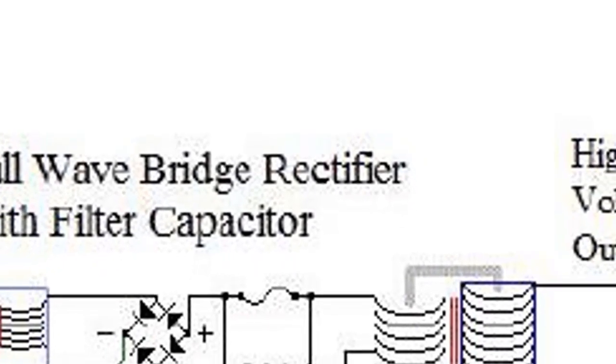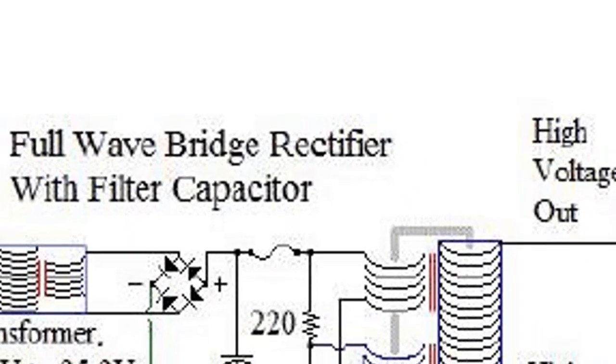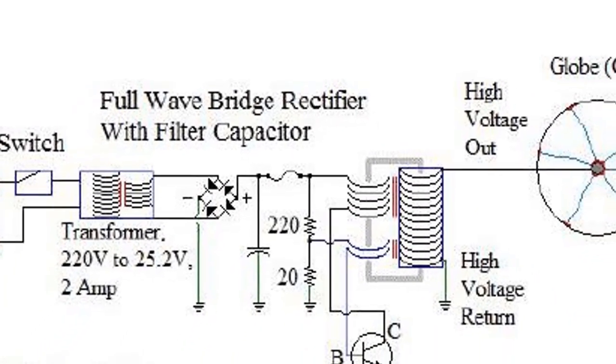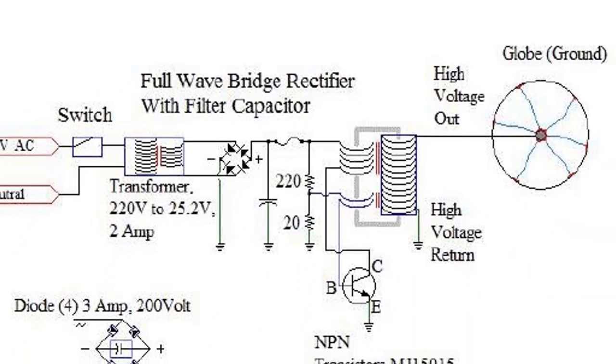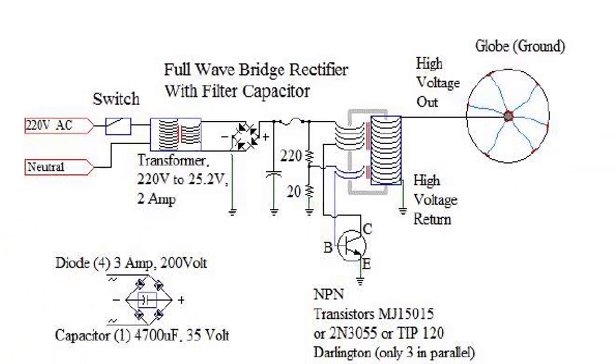The bifiler coil is a type of transformer that has two coils wound around each other. When current flows through the primary winding of the bifiler coil, it creates an oscillating magnetic field.